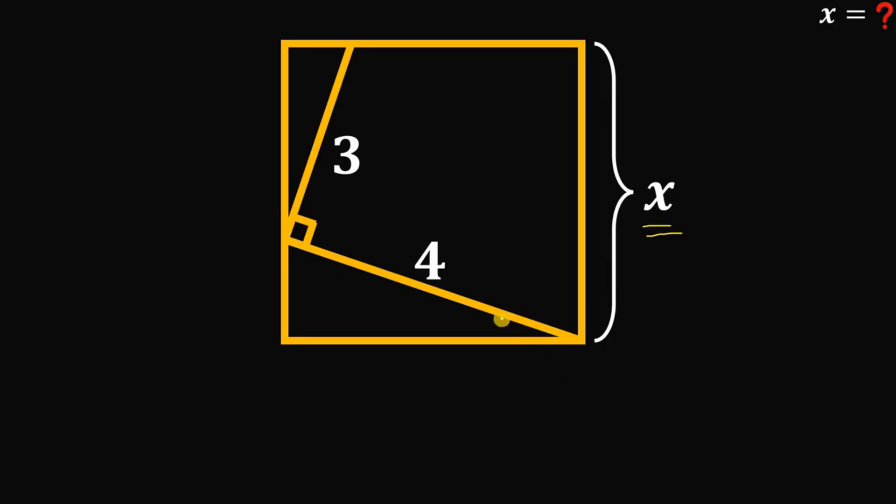Now here they are. If we let this angle be equal to alpha and this angle be equal to beta, this angle is also alpha. And this is beta and this is beta. Meaning these two right triangles are similar to each other.